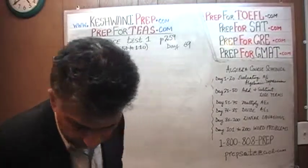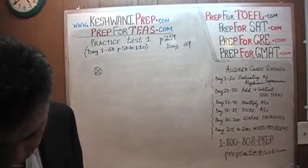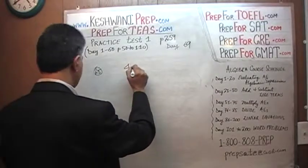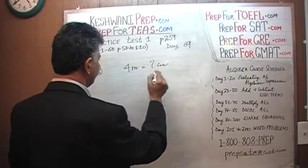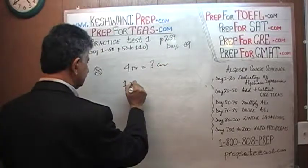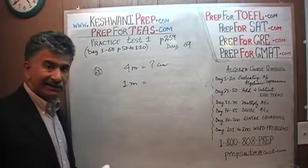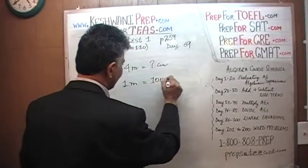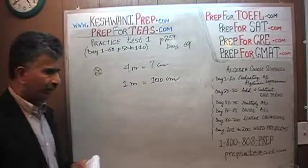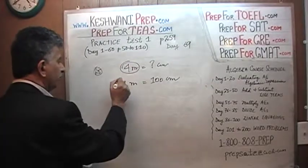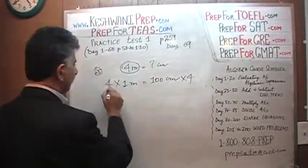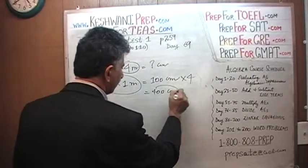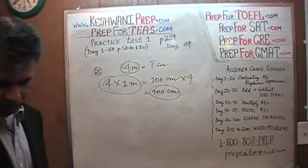Let's see what number 25 says: which of the following is the number of centimeters in 4 meters? Oh, this is too simple. We have 4 meters, and the question is how many centimeters is that? We know 1 meter equals how much? Centi means times 100, so 1 meter is 100 centimeters. Therefore, 4 meters — you just multiply by 4 — and there's your answer: 4 meters is 400 centimeters.